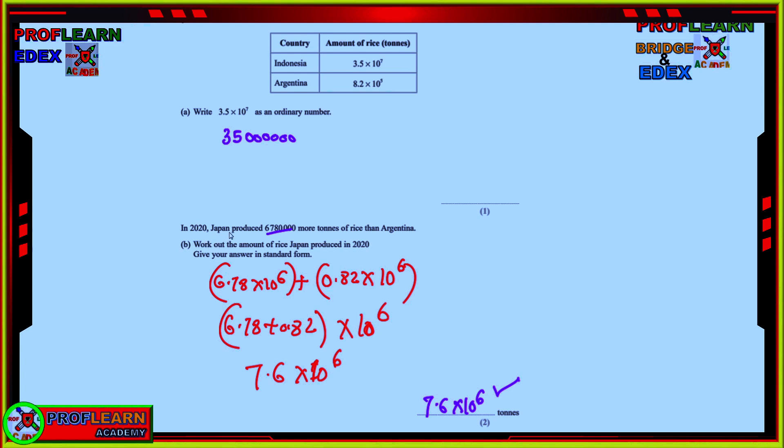In 2020, Japan produced 6,780,000 more tons of rice than Argentina. So, Argentina is 8.2 times 10 to the power 5. So, meaning we are going to write this number in standard form so that we can be able to add them together. So, I have 6.78 times 10 to the power 6. And then, since this was power 5, I had to move this decimal backward so that I can have the same powers here on 10. Then, I can add 6.78 plus 0.82, which gives me now 7.6 times 10 raised to power 6 shown there.